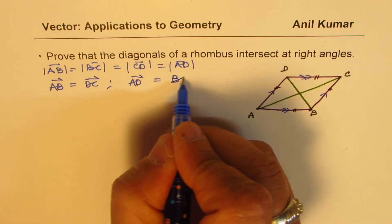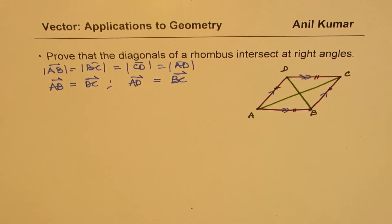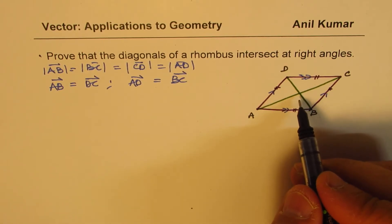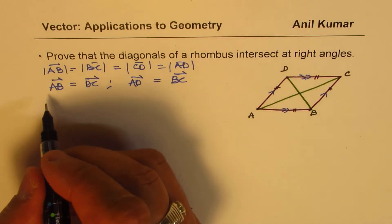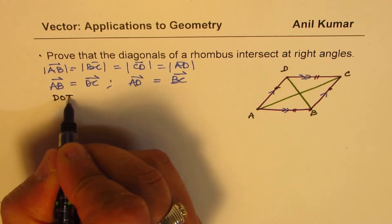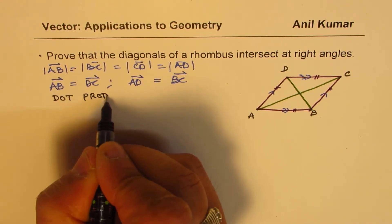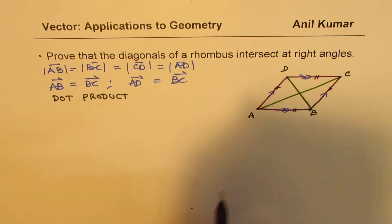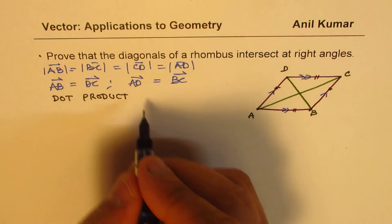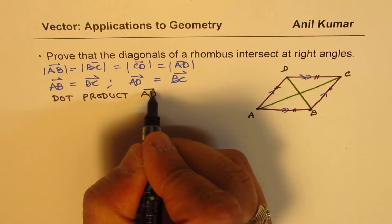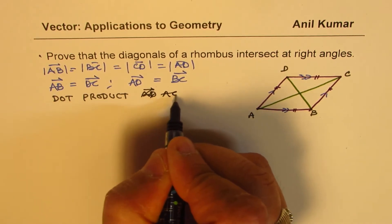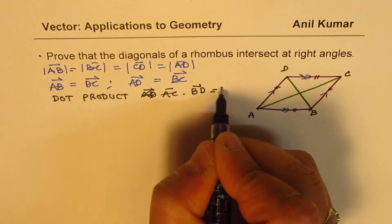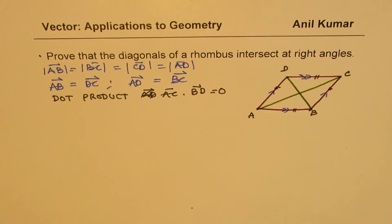To prove that the diagonals are intersecting at right angles, we will find the dot product. The concept is that the dot product of the two diagonals — AC and BD — should be equal to zero. That is what we want to prove; if that holds, they are intersecting at right angles.